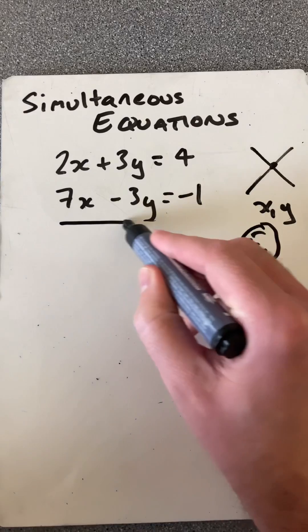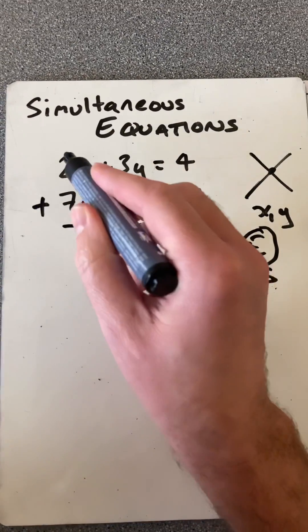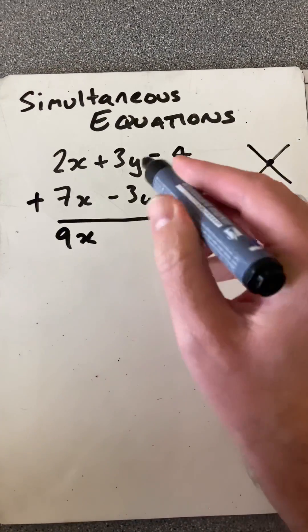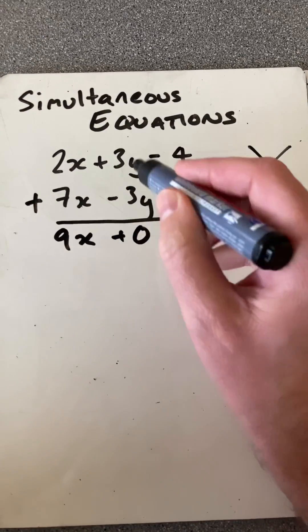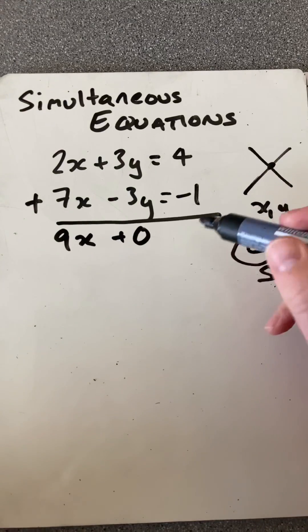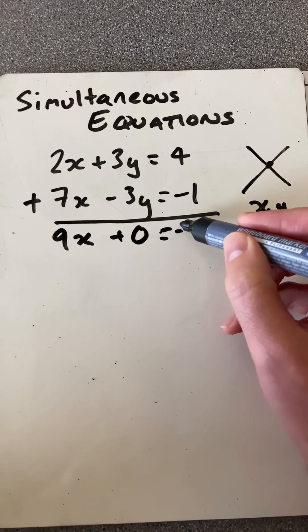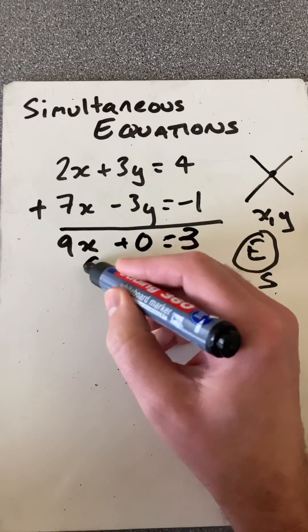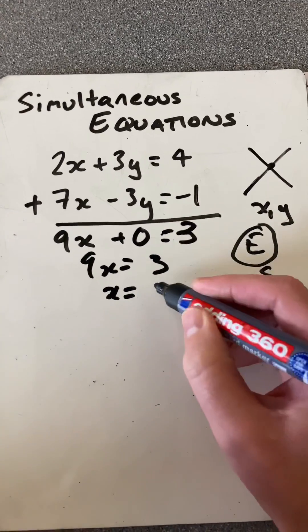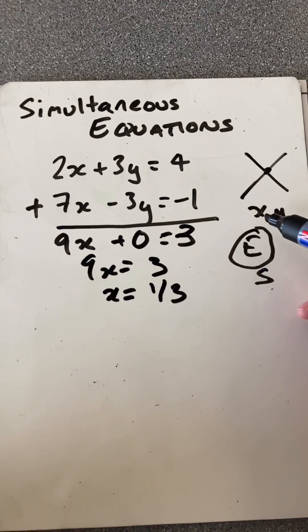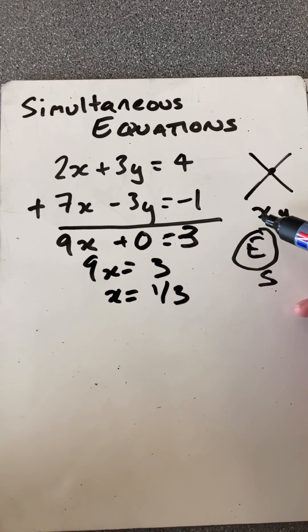So to do that, we're going to add these two together. 2x plus 7x is 9x. 3y add minus 3y is 0 and we've eliminated y. 4 add minus 1 is 3. So now I have 9x equal to 3, so x will equal a third. So I found one of the coordinates that I need to solve this.